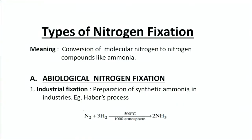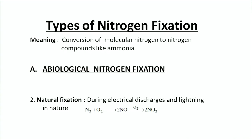Nitrogen fixation is the process of conversion of molecular nitrogen to nitrogen compounds such as ammonia. The first type is called abiological nitrogen fixation because it does not involve microbes. The first process under abiological fixation is Haber's process — preparation of synthetic ammonia at the industrial level, where nitrogen combines with hydrogen under high temperature and high pressure to form ammonia. The second abiological process is natural fixation, which occurs during electrical discharges and lightning, where nitrogen combines with oxygen to form different nitrogen oxides in the atmosphere.